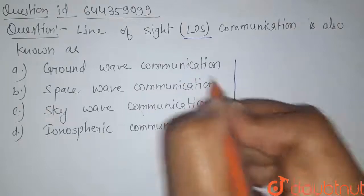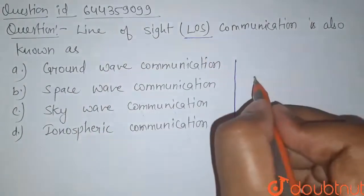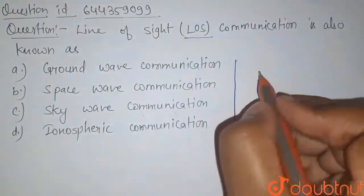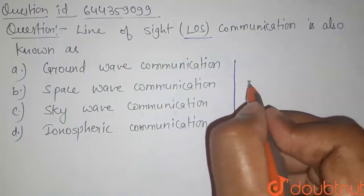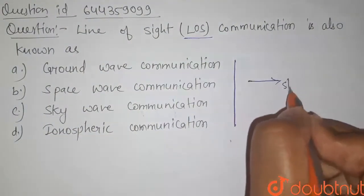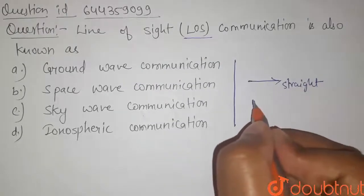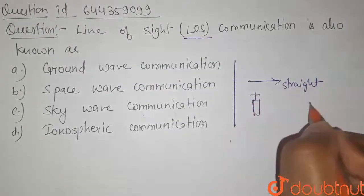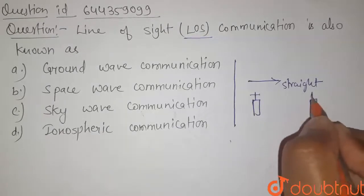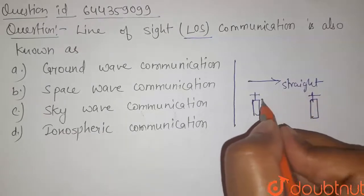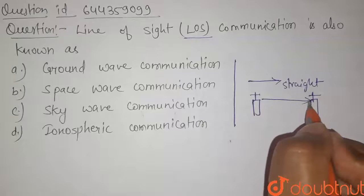First of all let us know about what is line of sight. So line of sight communication is a communication where the signal travels in a straight line or we can see that the transmitter or the receiver are in a perfect view of each other, i.e. they can be viewed in a straight line.